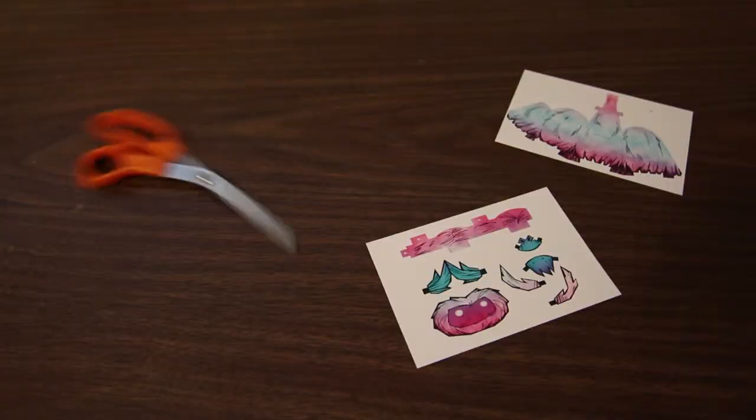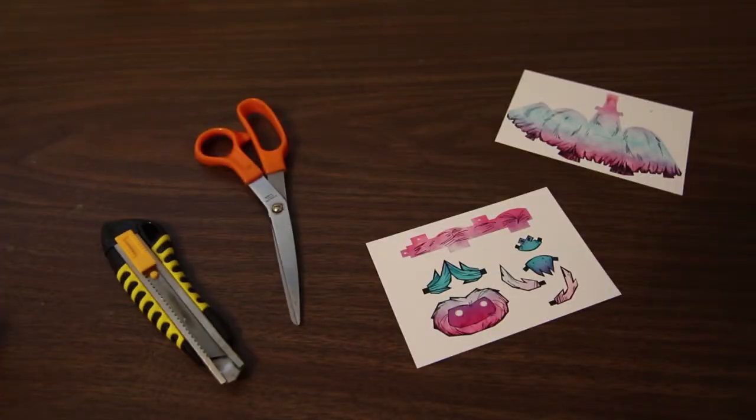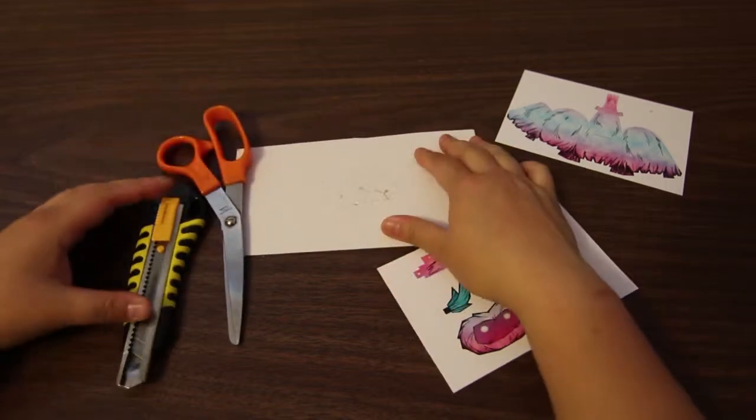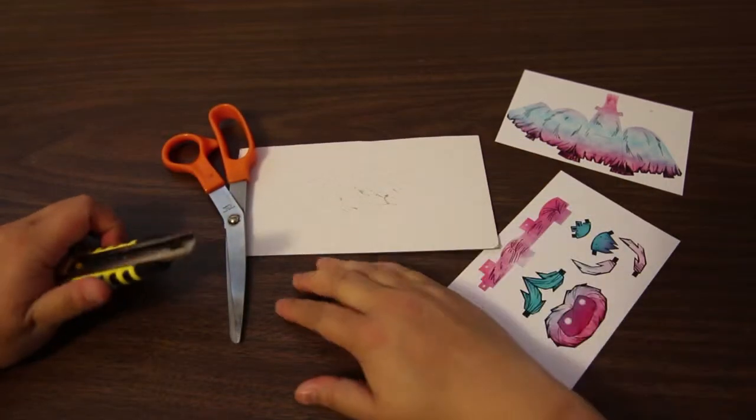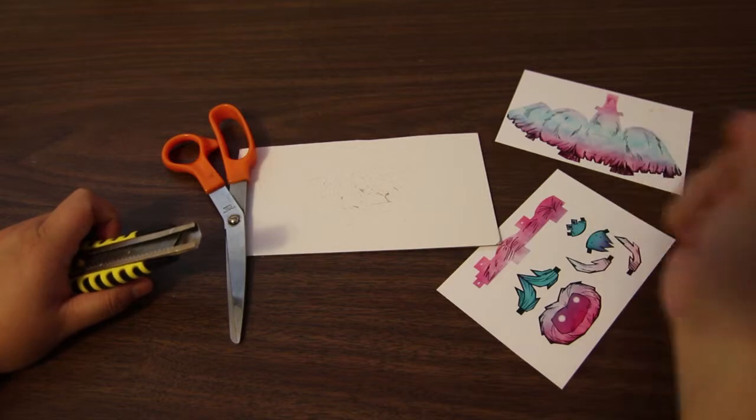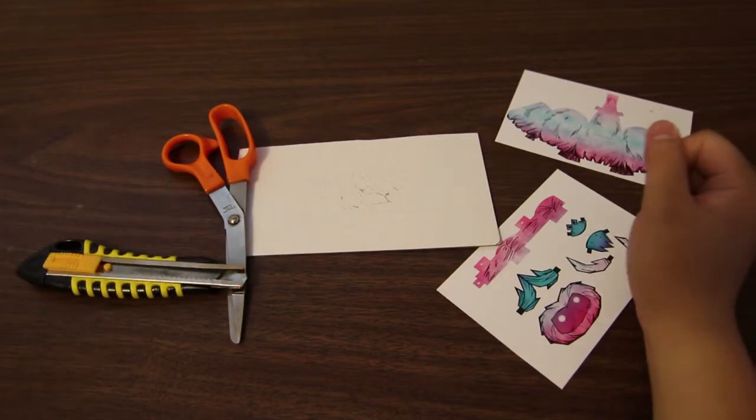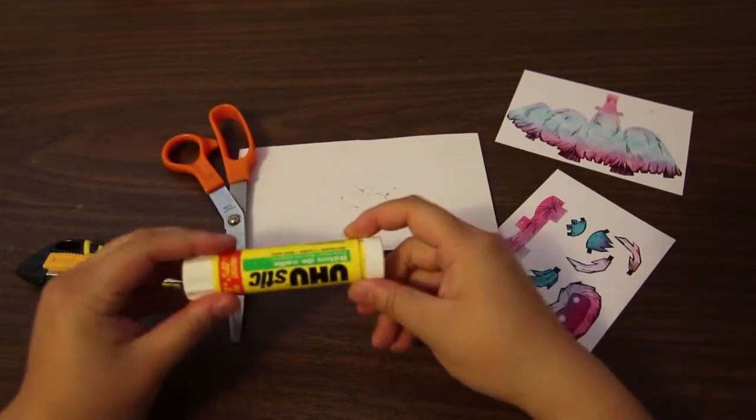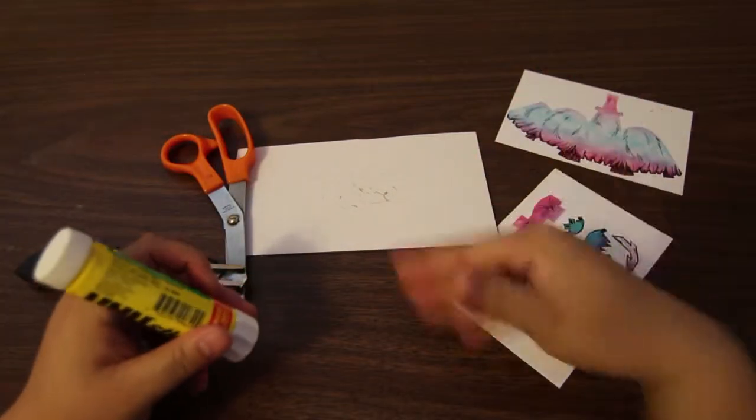Or, you know, some scissors. An exacto knife. And you're gonna want something hard or a piece of cardboard to cut into, because if you cut up this desk, you're probably gonna anger someone. And you're also gonna need a glue stick or some sort of adhesive that you can glue all this fun stuff together.